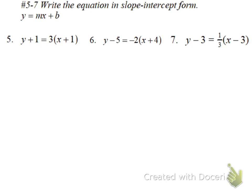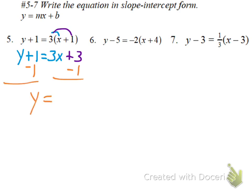On these three, we're changing from point-slope form, which has the parentheses, to slope-intercept. So the first thing we've got to do is get rid of the parentheses. Y plus 1 equals 3 times x, which is 3x, and 3 times 1 is 3. Now, to get rid of the plus 1 — because in our formula y is by itself — we'll subtract 1 from each side. So we have y equals 3x plus 2. That's slope-intercept. Our slope is 3 and y-intercept is 2.